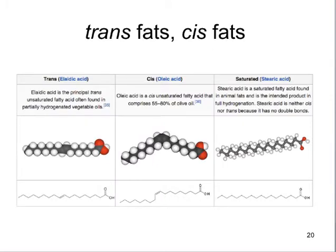Now, looking at the difference between saturated and unsaturated fats: an unsaturated fat can be a trans fat. In this case, even though the unsaturated fat has a double bond, the fill model, as you can see here, is very linear — so it behaves almost like a saturated fat, even though it's unsaturated. These trans fats are not very common in nature and are mostly produced by overheating vegetable oils, for example.